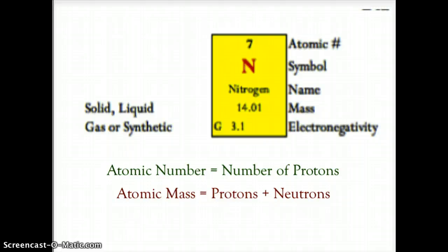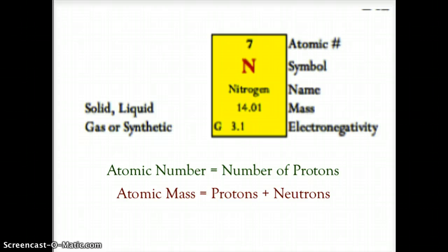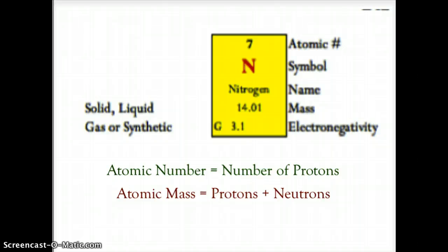The symbol is the chemical symbol for the element — always a capital letter, and if there are two letters, it's a capital followed by a lowercase. So if you see two capital letters in a row, those are two different elements. The name is listed as well, and some elements use their Latin name or Latin symbol, which is why the symbol and name don't always match.